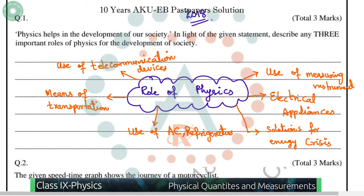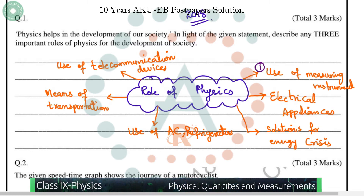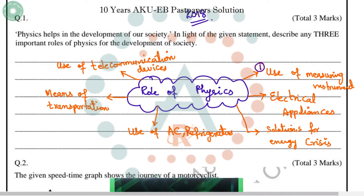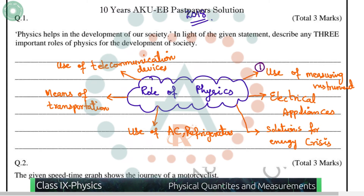First of all, we look at measuring instruments. Measurement plays an important role in our daily life. Every branch of science involves measuring instruments, and we need to take precise and accurate measurements. This precision is only possible due to the application of physics.